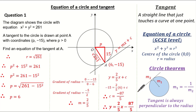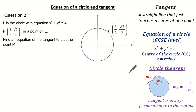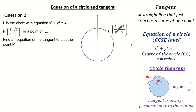That was a substantial question because it used lots of important facts associated with circles. Let's do another exam question. The question states that L is the circle with the equation x squared plus y squared equals 4. The point P has the coordinates (3/2, root 7 over 2) and is on the circle L. We are asked to find the equation of the tangent to L at the point P.